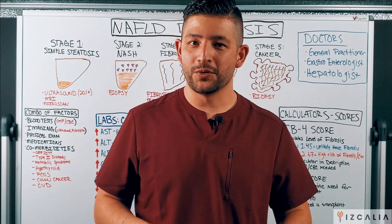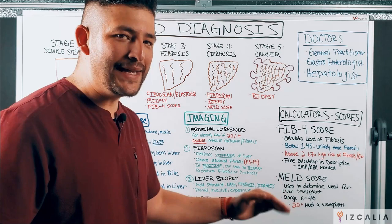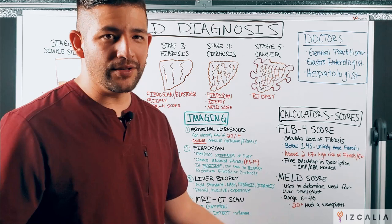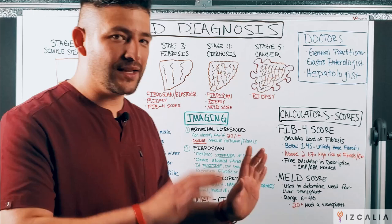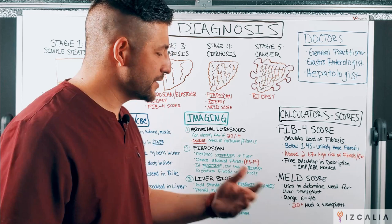For those of you in the advanced fibrosis and cirrhosis stage, you might come across what's called a MELD score. The MELD score is typically utilized by your doctor to determine your need for a liver transplant. It ranges from 6 to 40. If you hit a MELD score of 20 or above, chances are you're probably going to need a liver transplant. There is also research showing that even a score of 15 can warrant a referral for a liver transplant.